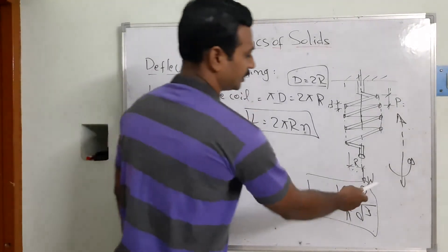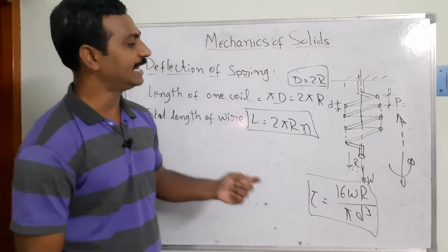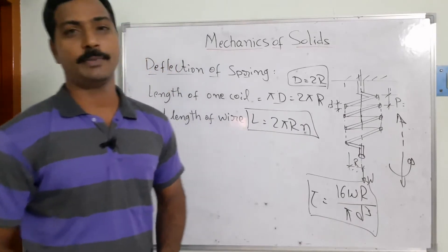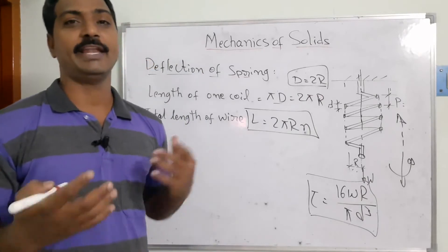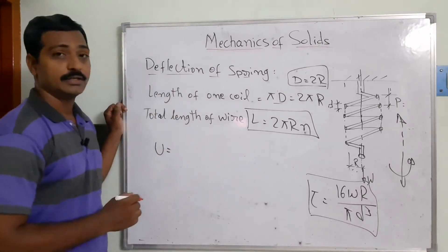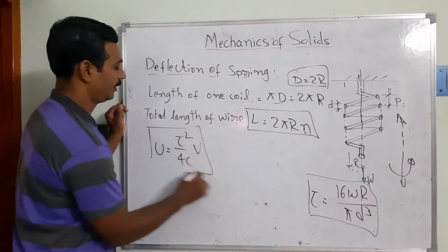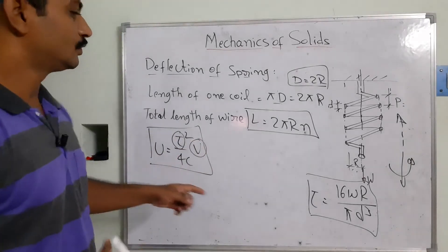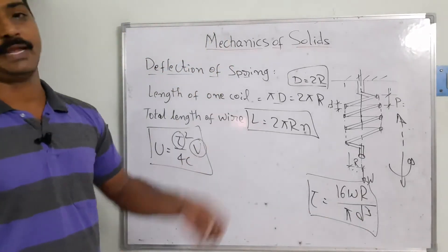When the spring is subjected to an axial load, each part of the spring is also subjected to torsional loads. The spring absorbs energy in the form of strain energy. The strain energy equation for torsional members is: U = τ² / (4C) × volume.